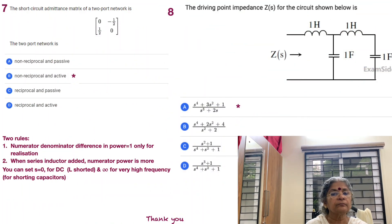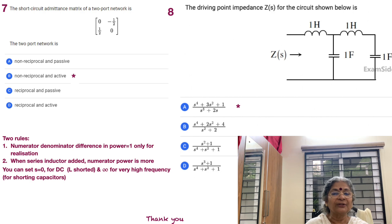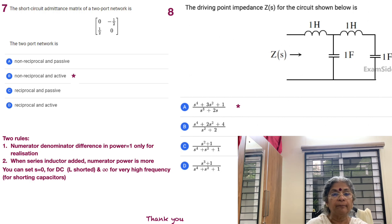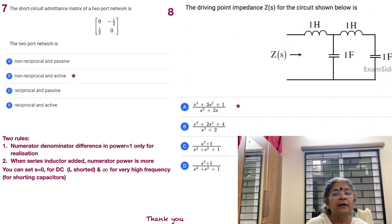Moving to the fifth problem, we see ZA and ZC connected together. In a linear two-port network, when 10 volts is applied to port 1, a current of 4 amps flows through port 2 when it is short-circuited. The impedance ZA can be calculated as 10/4 = 2.5 ohms, because ZC is short-circuited.